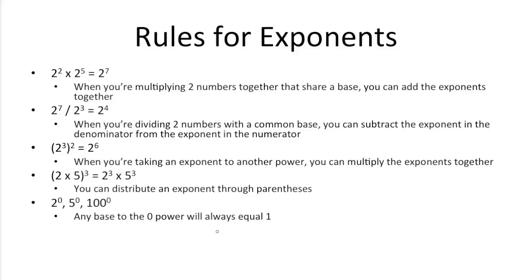So general rules for exponents, when you are multiplying two numbers together that happen to share the same base, 2 squared here, 2 to the fifth here, you can actually add the exponents together. So that's why you get 2 to the seventh here. So if this were 5 cubed times 5 squared, what you would get is 5 to the fifth power.